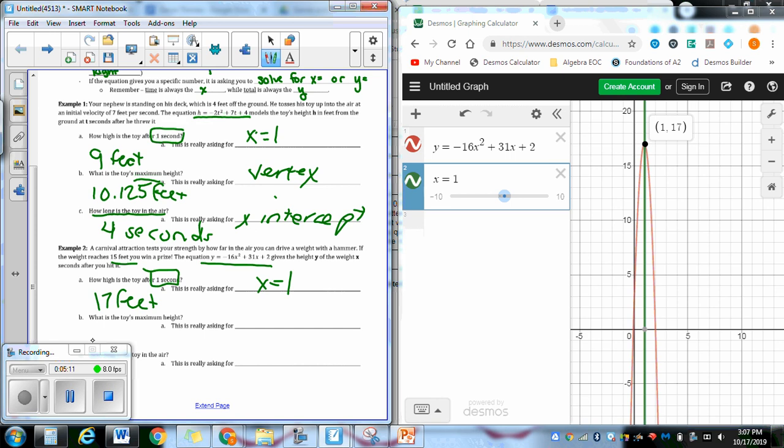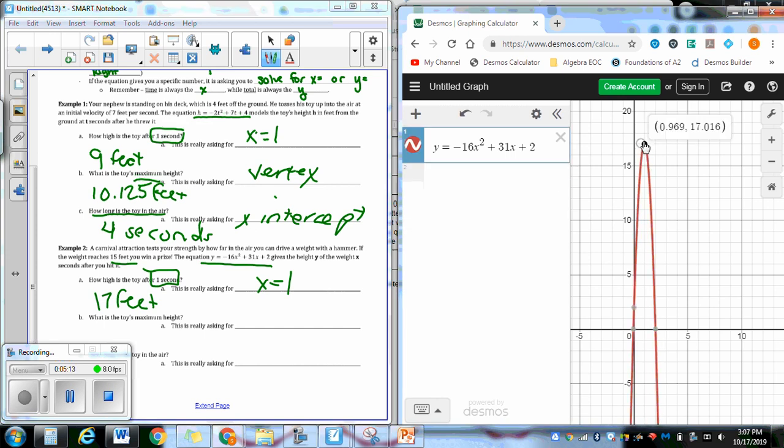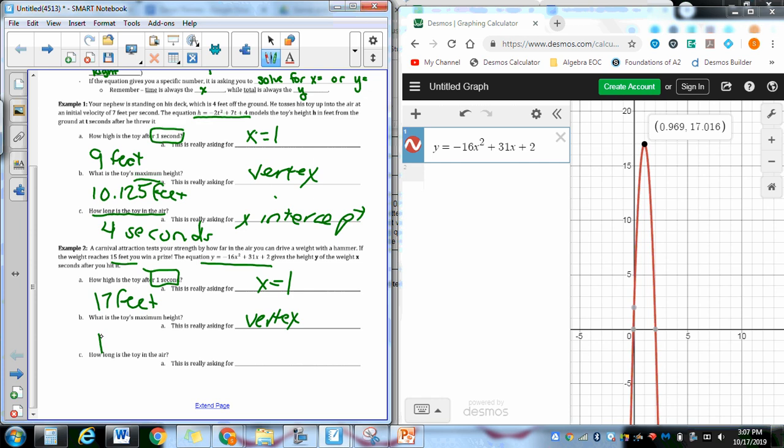The toy's maximum height, you will notice, is at the vertex. This is really asking for the vertex. Maximum is a vertex kind of word. The maximum height is 17.016 feet. No rounding.